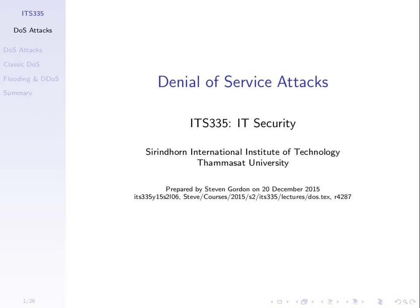If you remember back to the original topic in the first week, we listed some services we want to provide: confidentiality, authentication, integrity, access control, non-repudiation, and the sixth service was availability. A security attack would make that computer system unavailable — such an attack denies normal users use of the service. We call it a denial of service attack, abbreviated DOS.